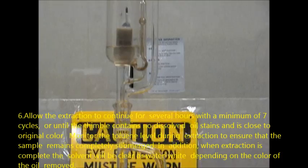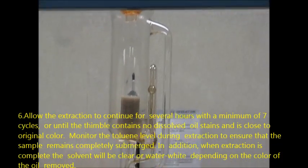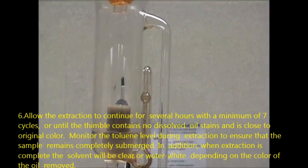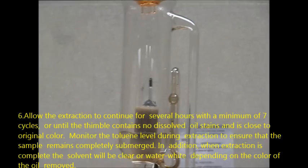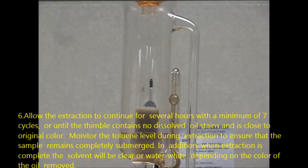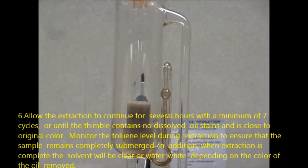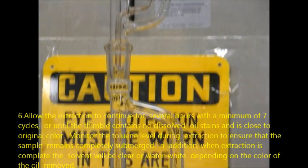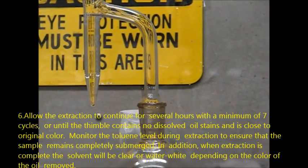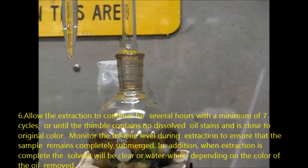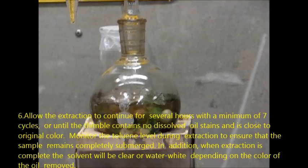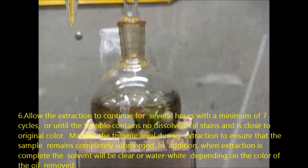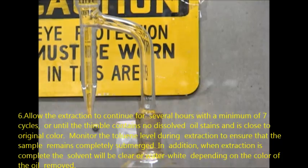Allow the extraction to continue for several hours with a minimum of 5-7 cycles or until the thimble contains no dissolved oil stains and is close to original color. Monitor the toluene level during extraction to ensure that the sample remains completely submerged. In addition, extraction is complete when the solvent will be clear or water white depending on the color of the oil removed.